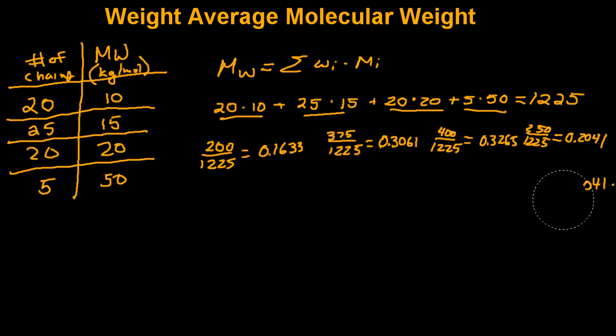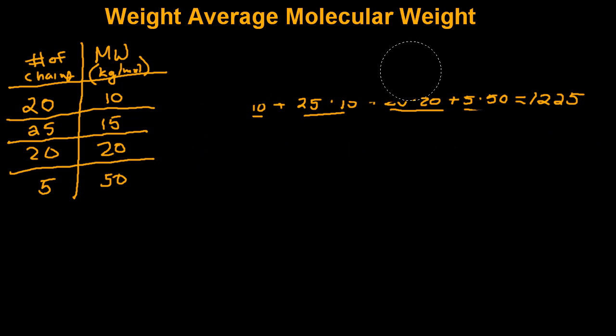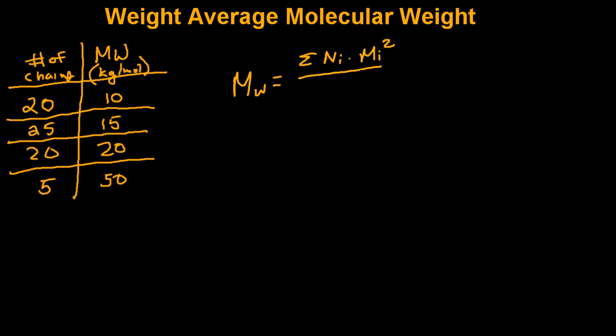Now let's use our other definition. So in the other definition, our weight average molecular weight is equal to the sum of the number of each chain length multiplied by its respective molecular weight squared over the sum of the number of chains with a certain molecular weight times that molecular weight. So we've actually calculated the bottom half. This is the total molecular weight of the sample, and that we calculated to be 1225.